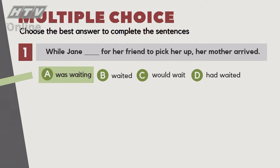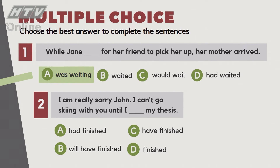Câu số 2: 'I'm really sorry John, I can't go skiing with you until I finish my thesis.' Tức là bây giờ tôi chưa làm xong luận văn nên chưa thể đi trượt tuyết. Cái việc làm xong luận văn là trong tương lai, nhưng chúng ta lưu ý: tương lai trong time clause không được dùng 'will'. Chữ B không chính xác. Chúng ta chọn đáp án C: 'have finished my thesis.'